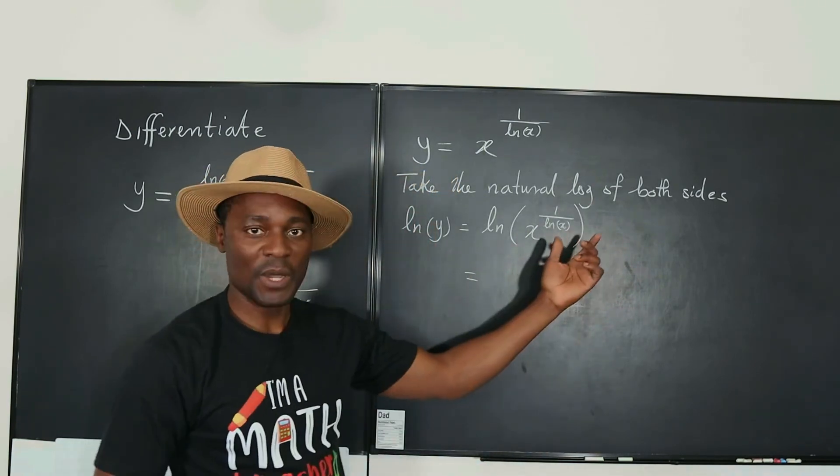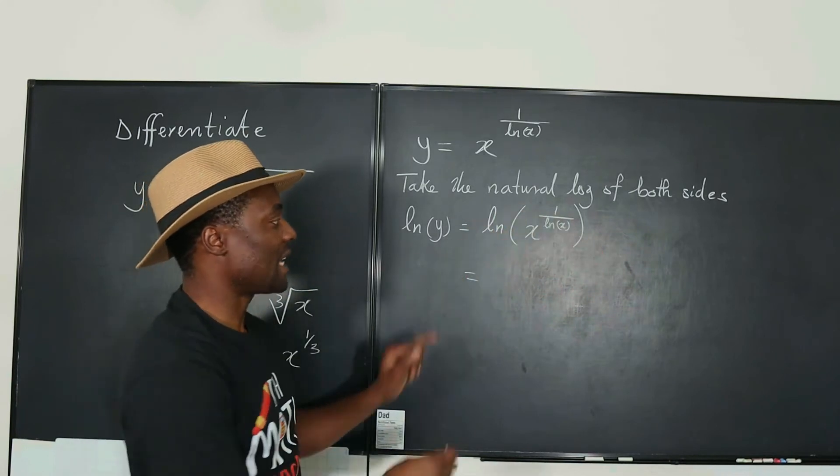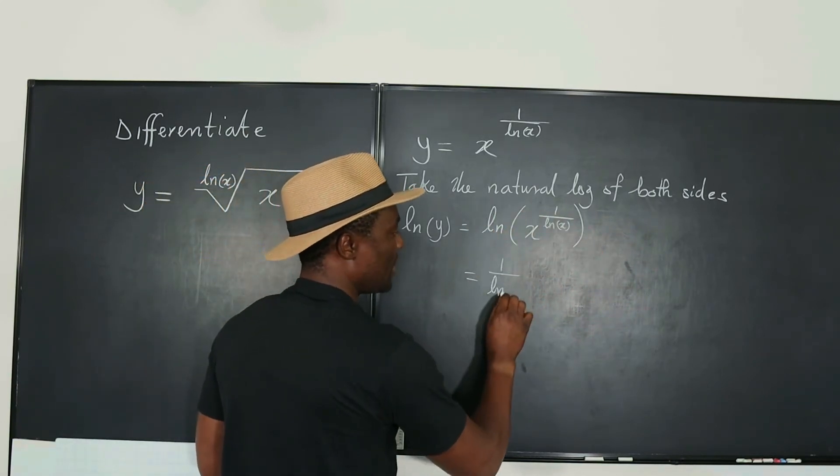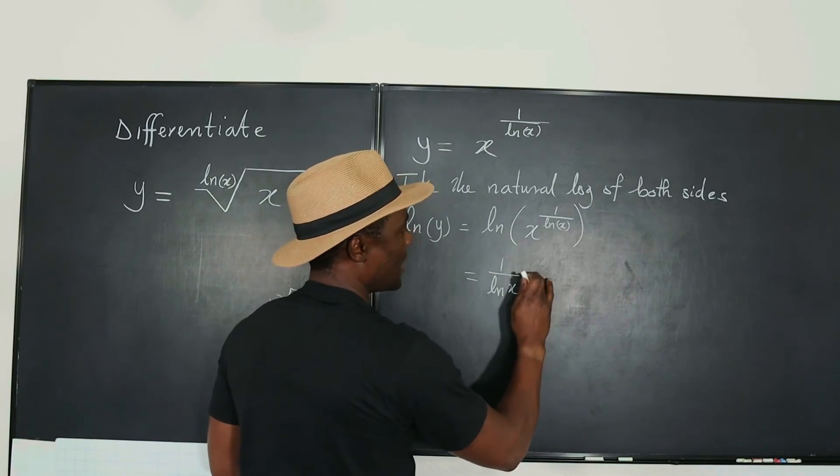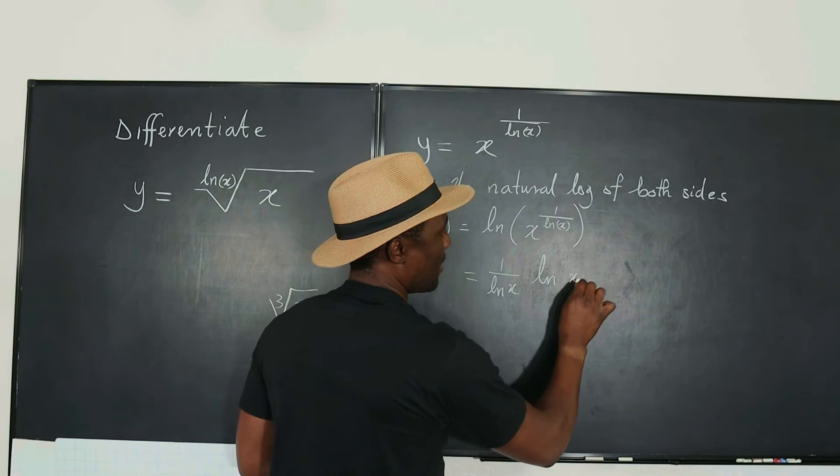And we can apply that rule that we know you can move this exponent back here. So it's going to be 1 over the natural log of x multiplied by natural log of x.